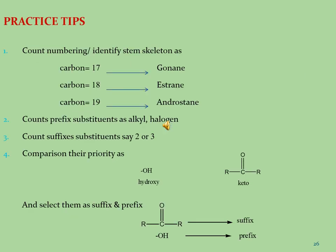These practice tips will definitely be helpful for giving the name of steroidal molecules. First, collect all the data on a separate page, then use that data for naming. Practice Tip 1: Count the carbon atoms and identify the stem skeleton. For example, if the total number of carbon atoms is 17, the name is gonane; if 18, the name is estrane; if 19, the name is androstane. In this way, we select the basic skeleton of the steroidal molecule.